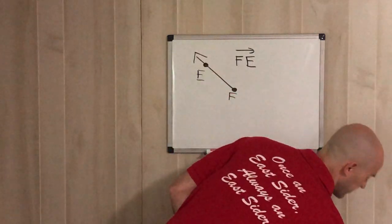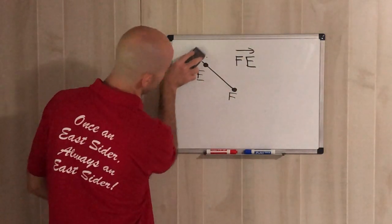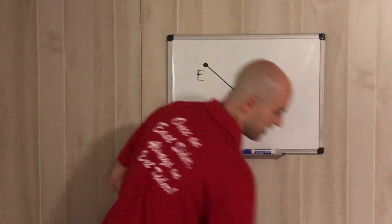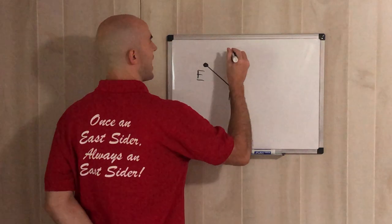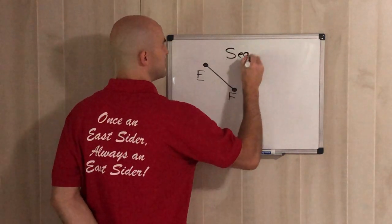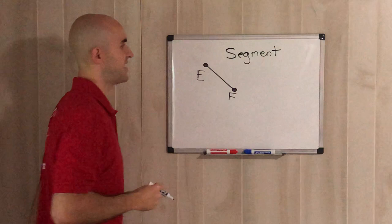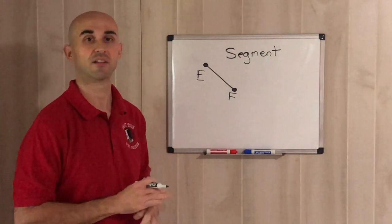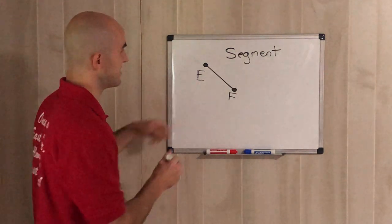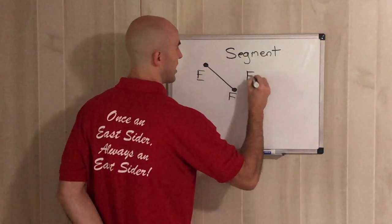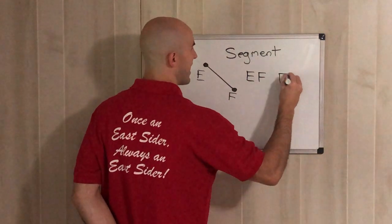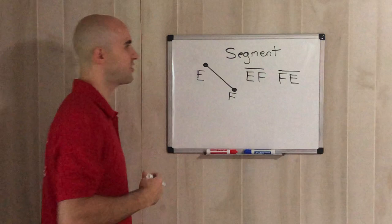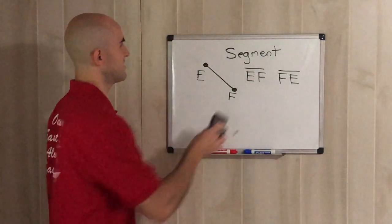If we have no arrows, that would be a segment. We know it's a segment because it has no arrows — a segment stops and starts, it never goes on forever. So with points E and F as a segment, we can call it EF or FE. Those are the main ideas behind lines, rays, and segments.